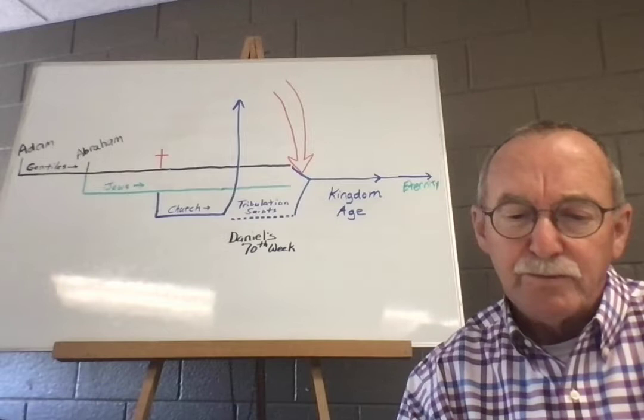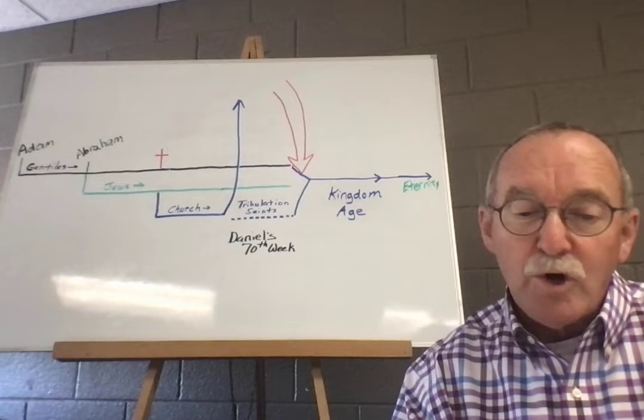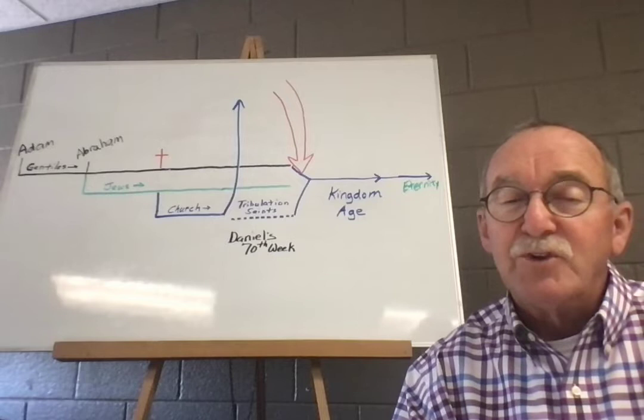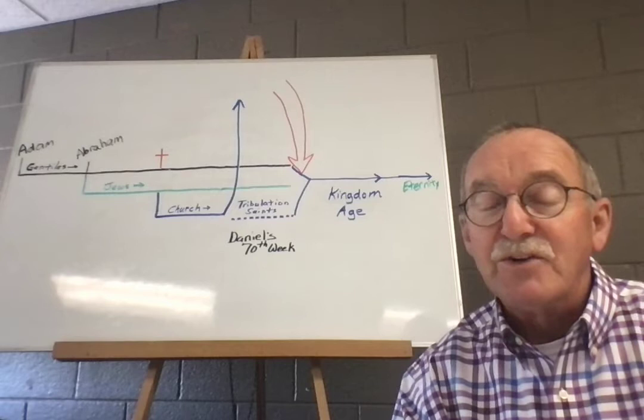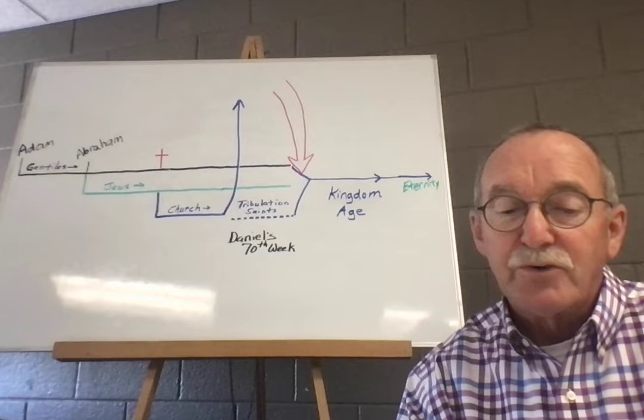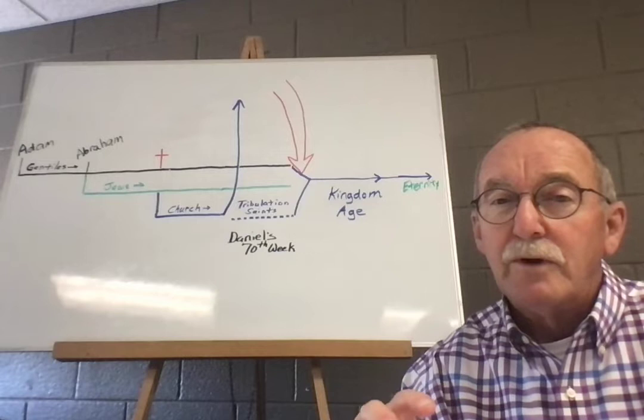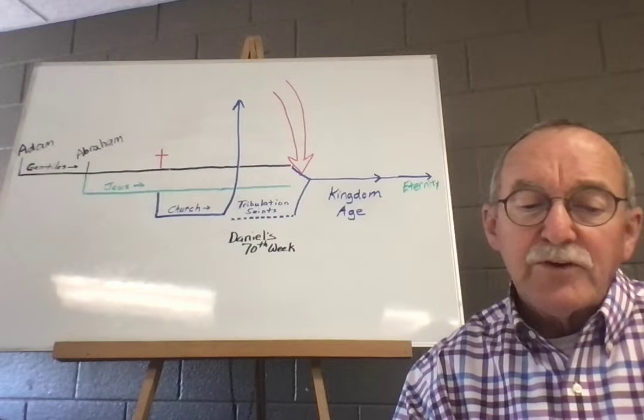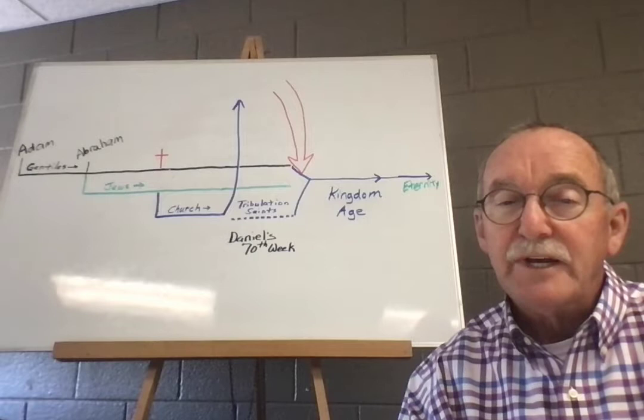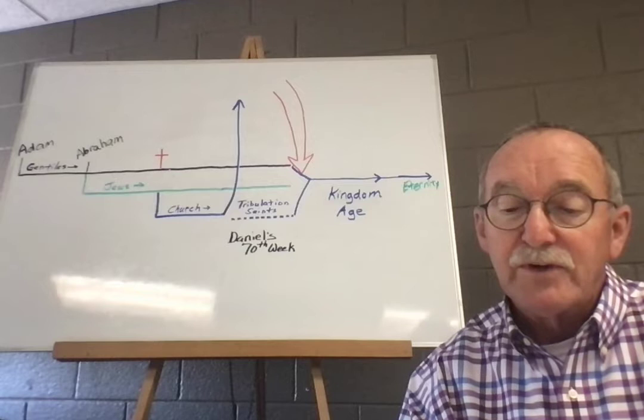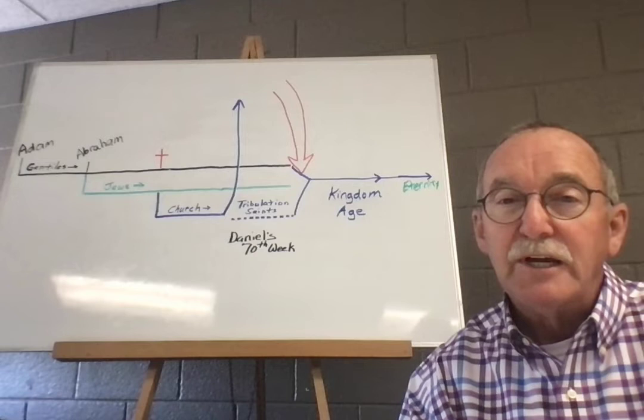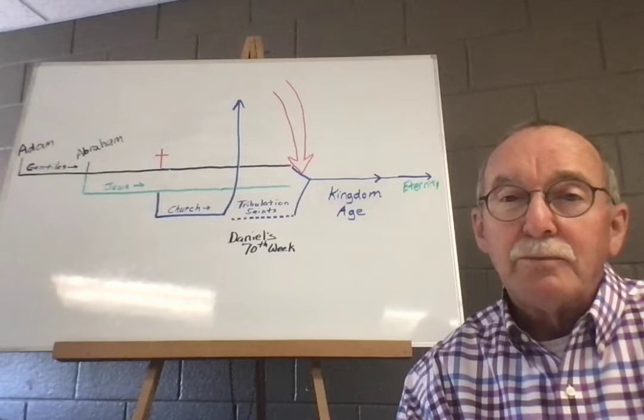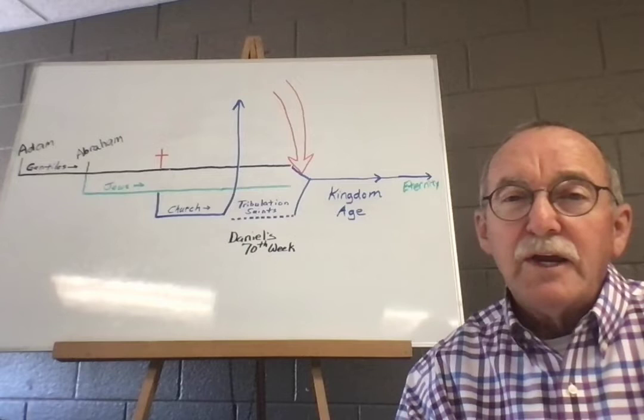So with that background, let's look at Ephesians chapter 1. Paul starts off, and beginning at verse number 3, he's going to give us a bunch of scriptural principles that are doctrinal, theological teaching that describe our position in Christ and in the world. He says in verse 3, remember that he's writing this to believers in the church in Ephesus. He says, 'Blessed be the God and Father of our Lord Jesus Christ, who has blessed us with every spiritual blessing in the heavenly places in Christ.'